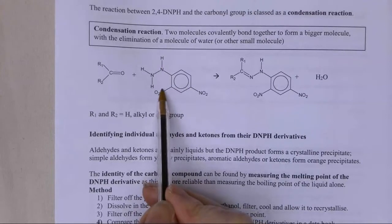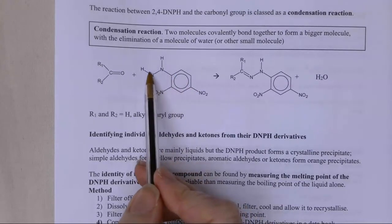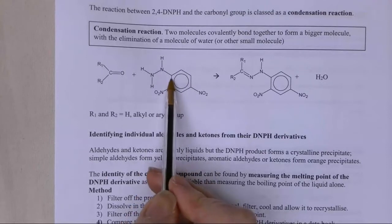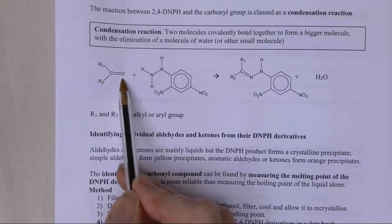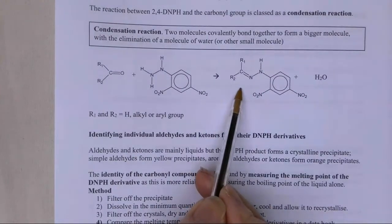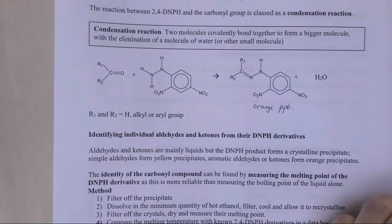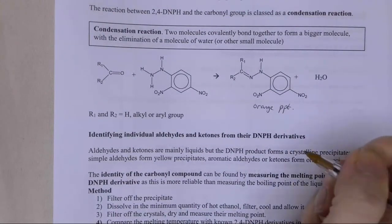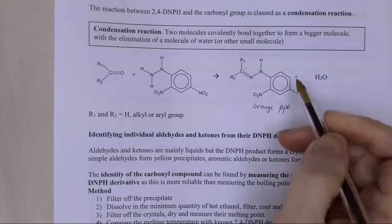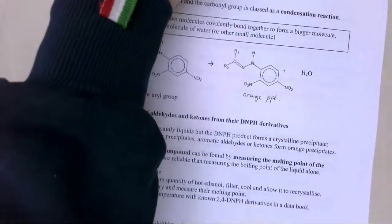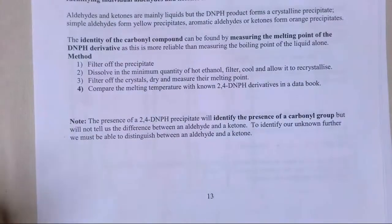So it's 2,4-dinitrophenylhydrazine - 2,4-DNPH - and this is the hydrazine molecule. You don't need to know the mechanism of this reaction. What you do need to know is that the 2,4-DNPH is an orange solution. The aldehydes or ketones are pretty colourless. What we're interested in is the product, which is always a precipitate - usually an orange precipitate. We can identify individual aldehydes and ketones from their 2,4-DNPH derivatives.